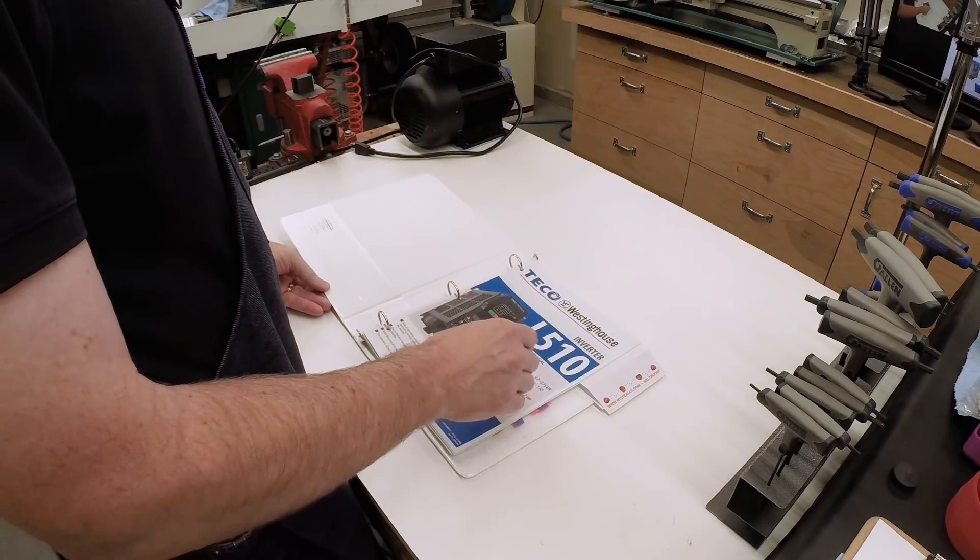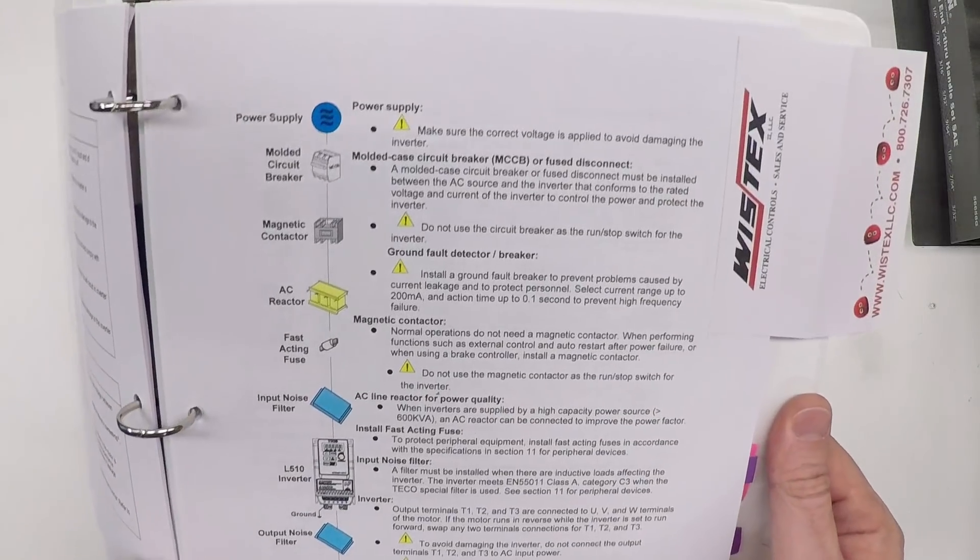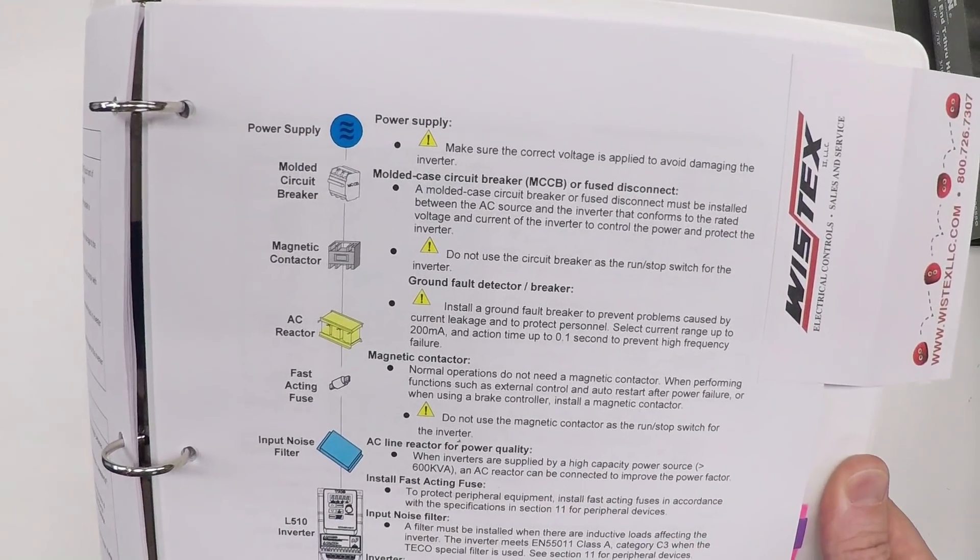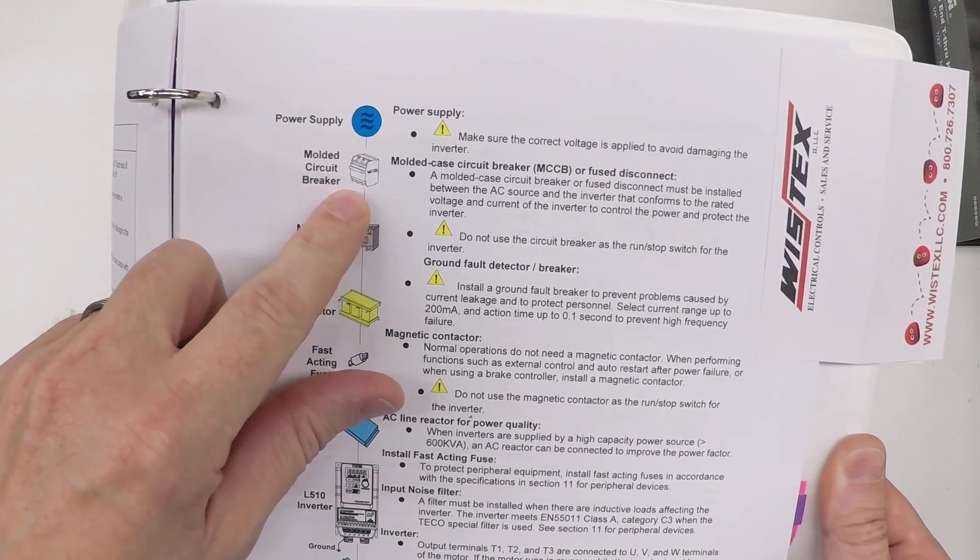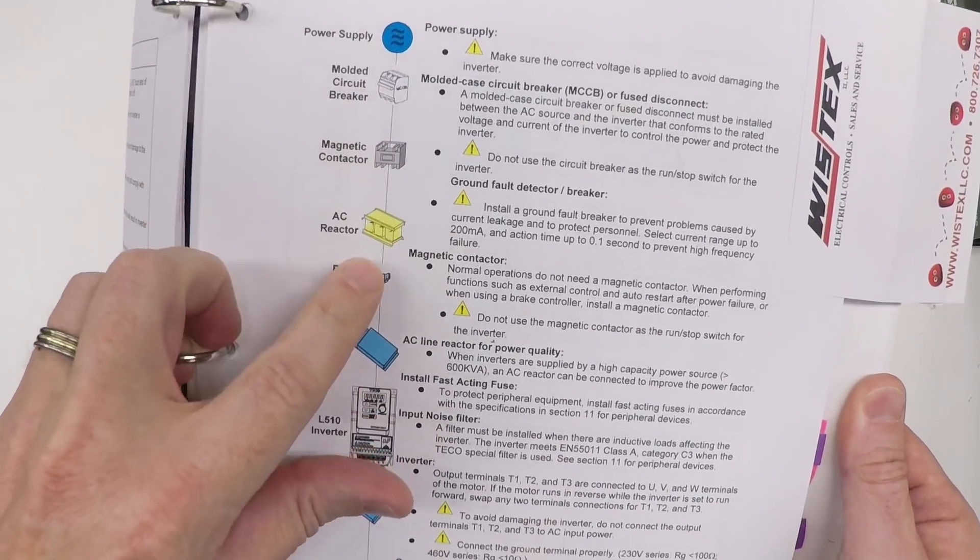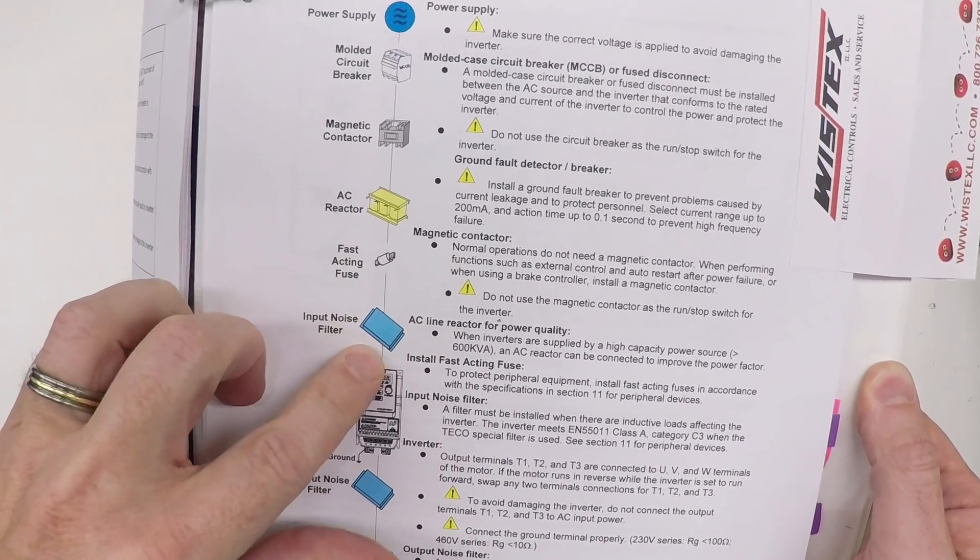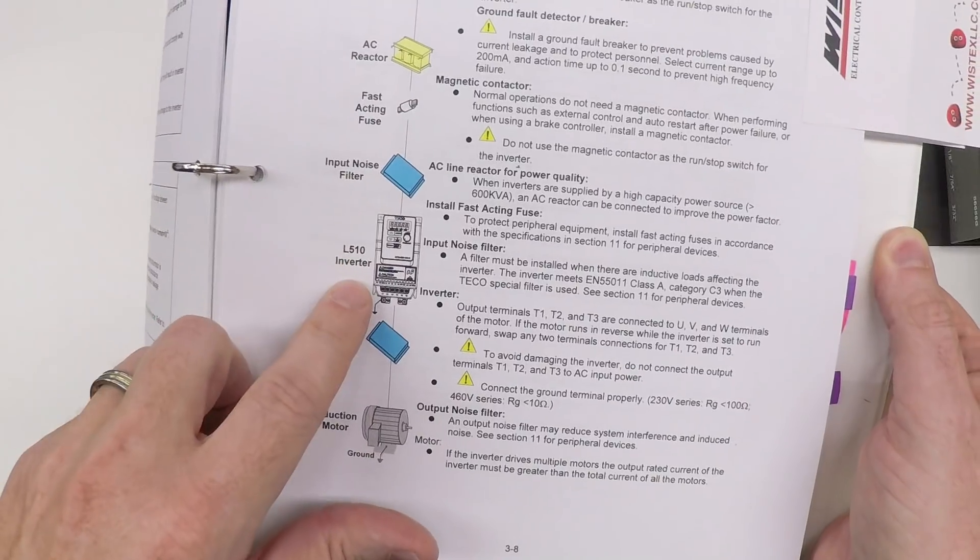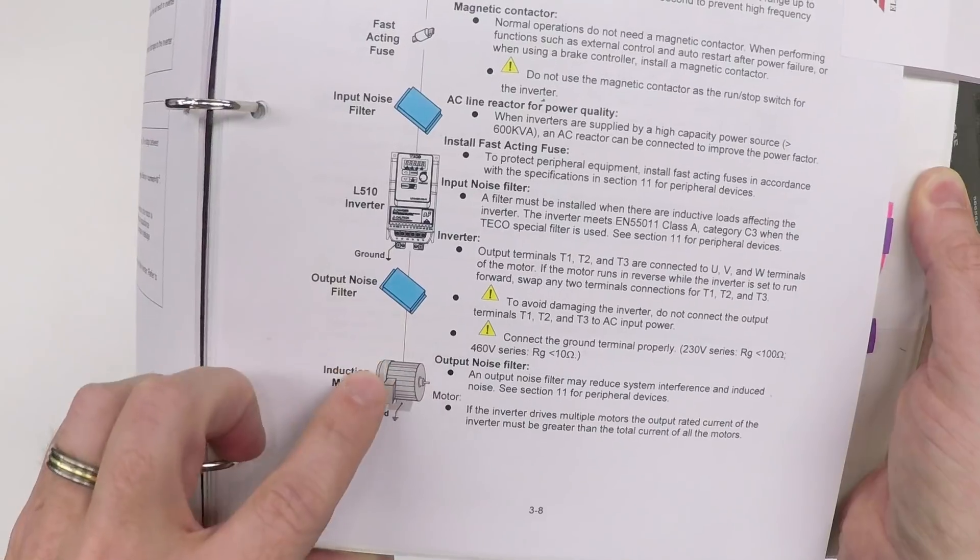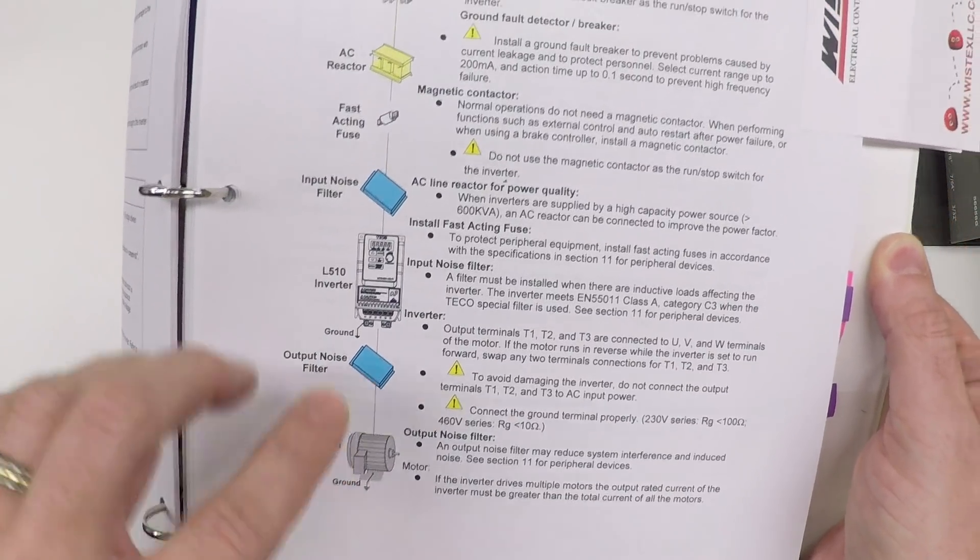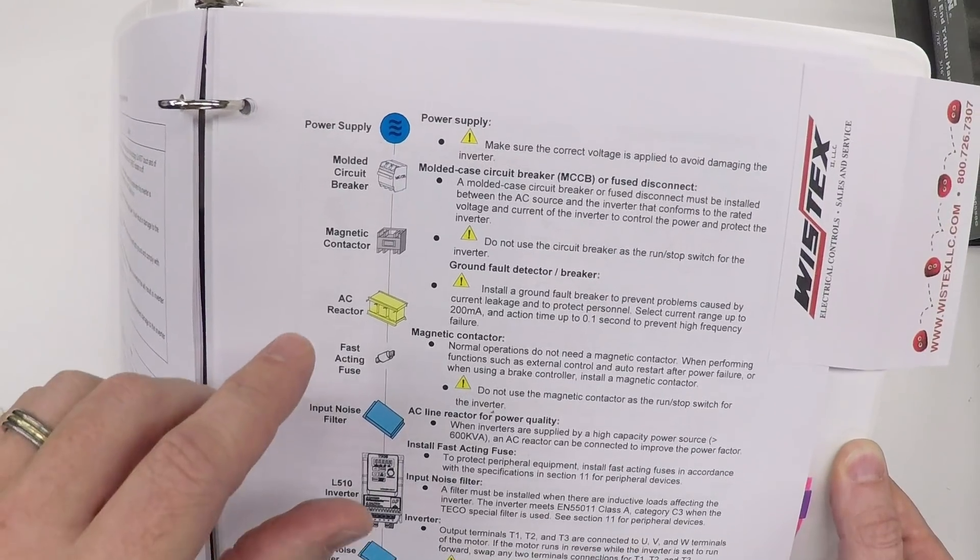This is the L510 VFD manual, and in the manual, they have a handy diagram showing how to connect it to power. Starting with the power supply, they recommend connecting it through a circuit breaker, a magnetic contactor, an AC line reactor, a fast acting fuse, an input noise filter, and then to the VFD. On the output side of the VFD, an output noise filter, and finally the motor.